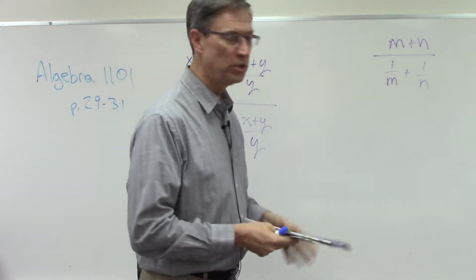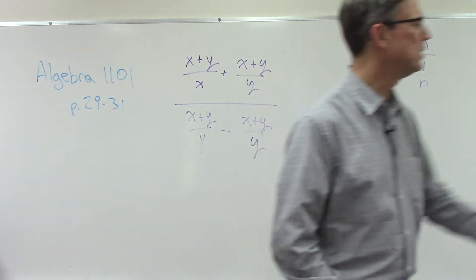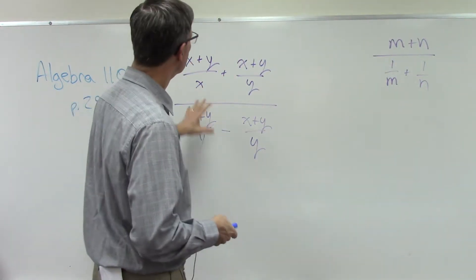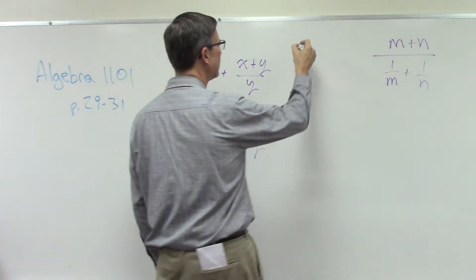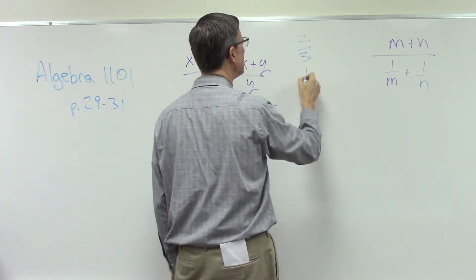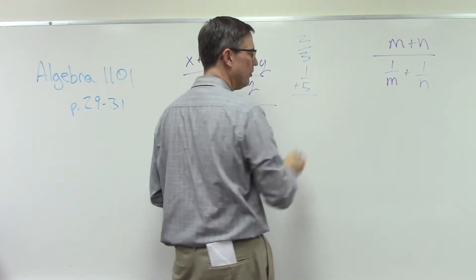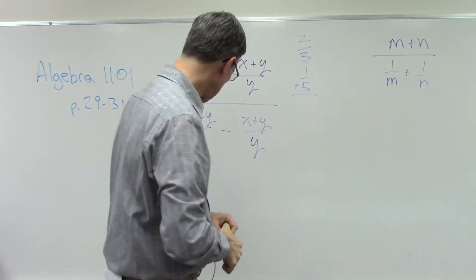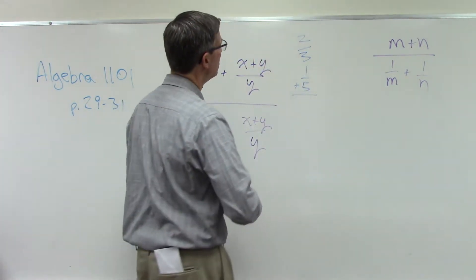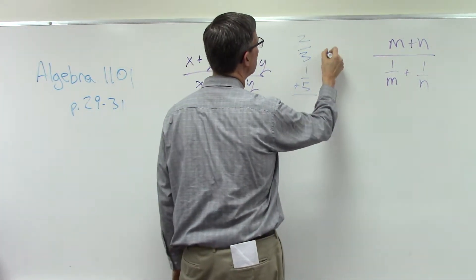Let's just kind of talk our way through a couple of these, and maybe in the process of talking about it, it'll begin to make a little more sense. So whenever we're adding fractions, like two-thirds plus one-fifth, in order to add those, I would need to get a common denominator, right? So the common denominator is 15.